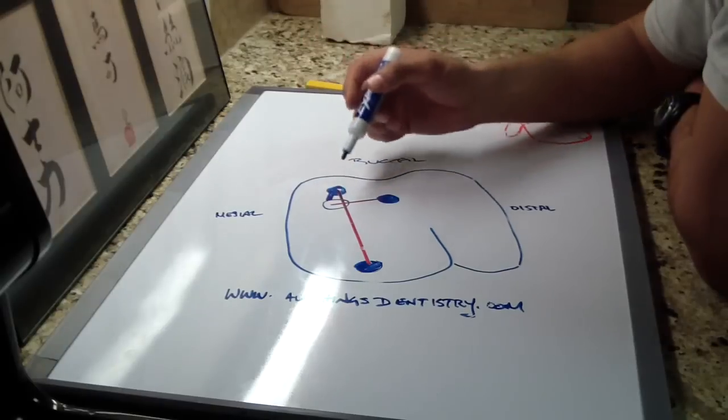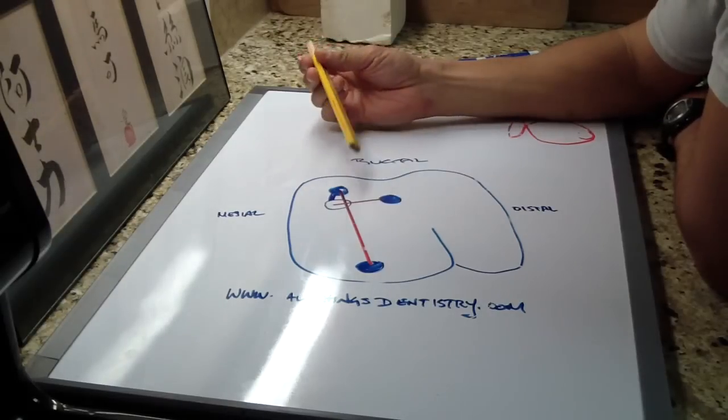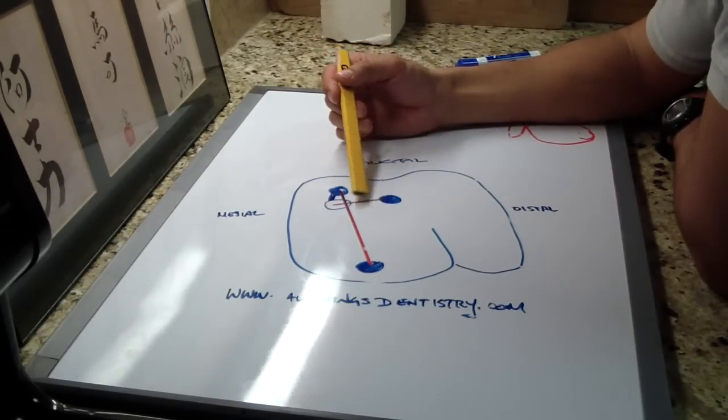So let's review that again. Draw a line from the MB1 to the palatal canal in your mind while you're doing your access, and then take another line and draw it perpendicular to that from the distal buccal canal.